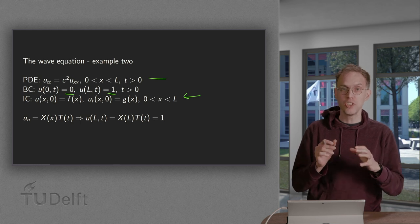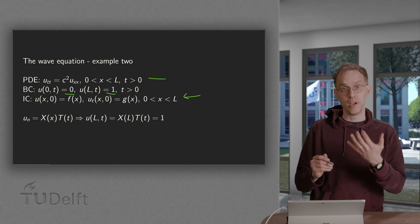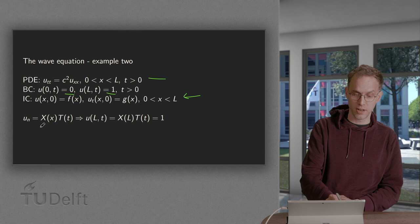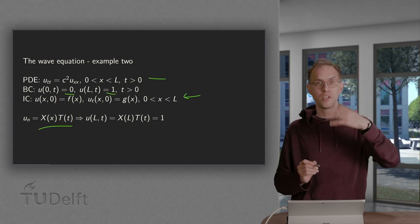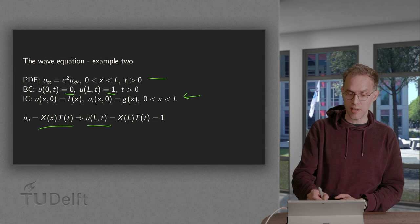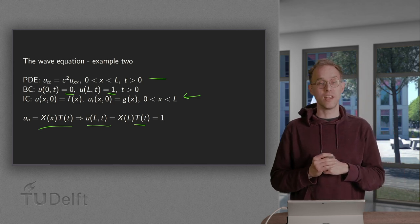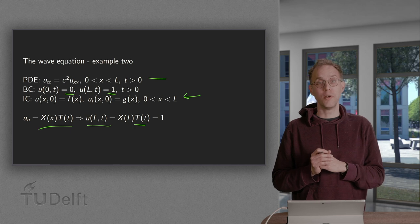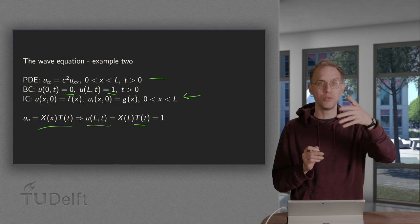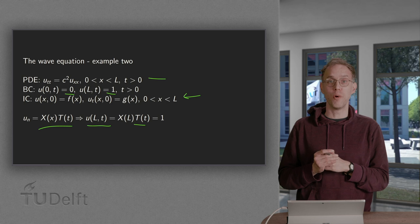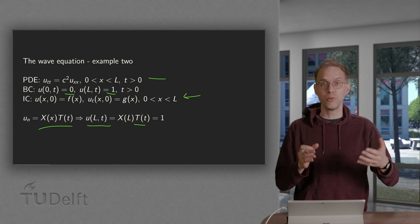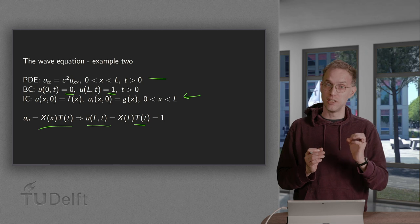Let's see what happens if we would just try to do separation of variables. We look for a superposition of solutions of the form X(x) times T(t). You can put it in the PDE — that works fine. However, if you look at the right boundary, we would get u(l, t) = 1, so X(l) times T(t) should equal 1, and that is not possible. You could maybe get one mode to equal 1, but then superposition will no longer give 1 on the right boundary. So direct use of separation of variables is not going to work.